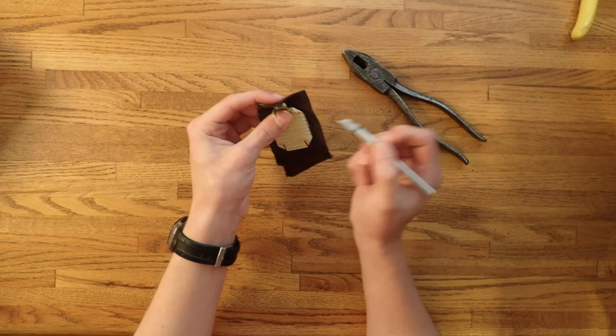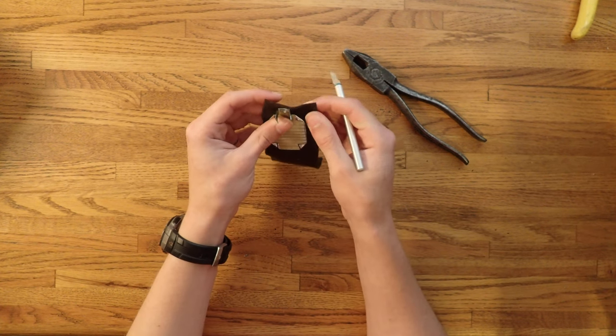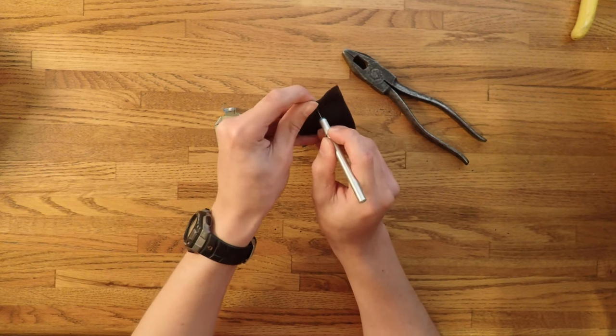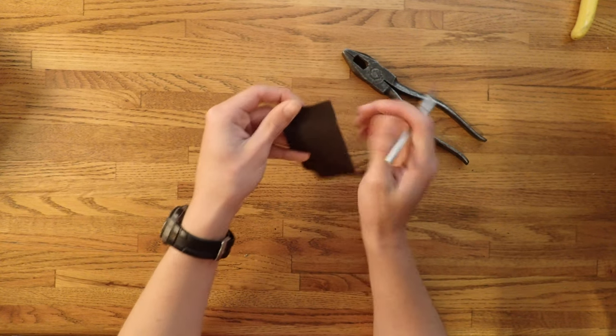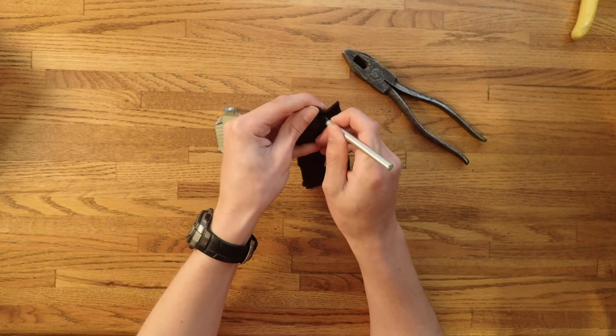And then without cutting your fingers, make two slits along either side. Make sure they're long enough so that the can can fit through.